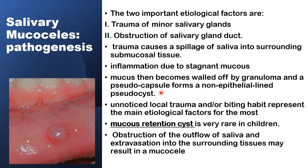Trauma in the form of lip biting, usually unnoticed, is a habitual behavior that represents the main etiological factor for most of these extravasation mucoceles. The other factor, obstruction of the salivary gland ducts, gives rise to a different subset: a mucus retention cyst, which is quite rare in comparison to the pseudocyst.